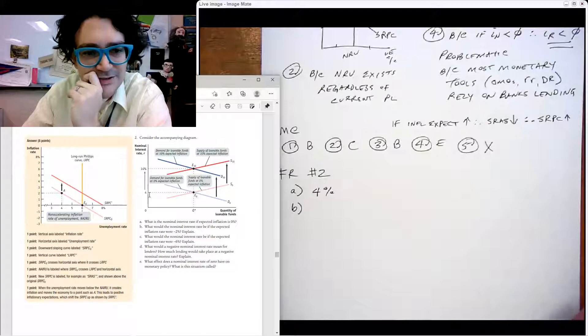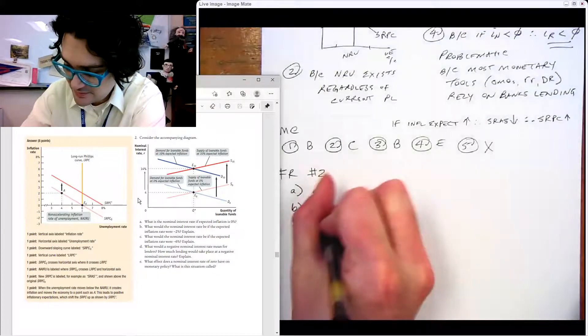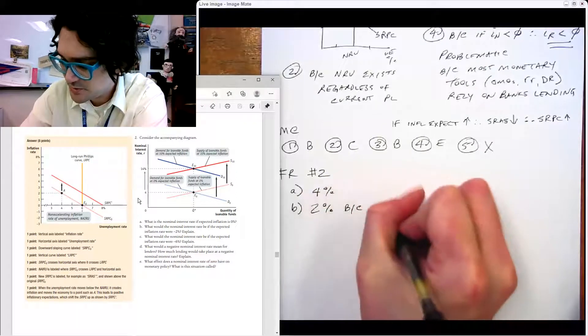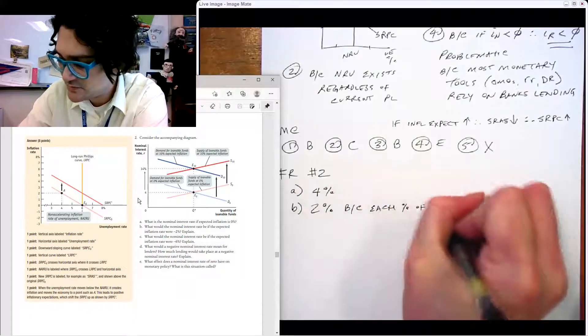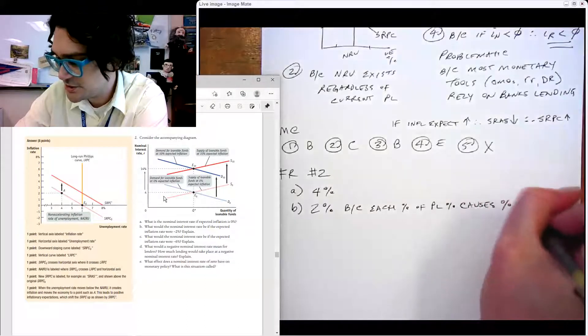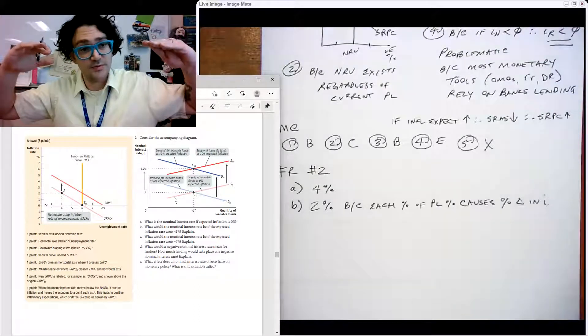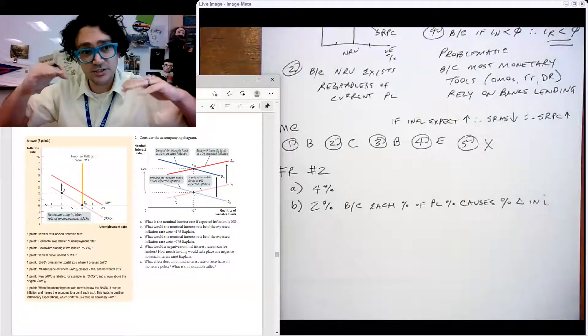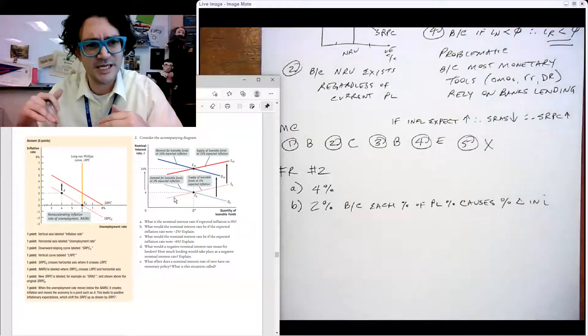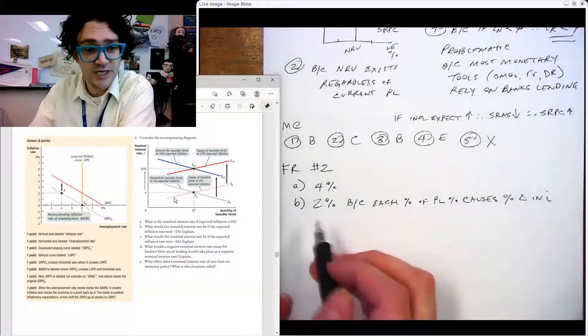What would be the nominal interest rate if the expected inflation rate were negative two? You can see here that D10, S10 are higher and it looks like they just add the 10 there. So it would be two percent, because each percent of price level causes a percent change in interest rate. What they're effectively doing is every time the inflation rate goes up a percent, then the nominal interest rate goes up a percent because the lenders are basically adjusting for nominal interest rates. That's what this diagram is actually telling us, it is a very strange diagram.